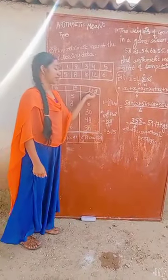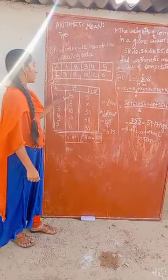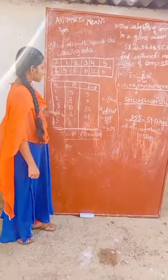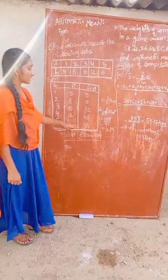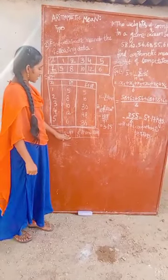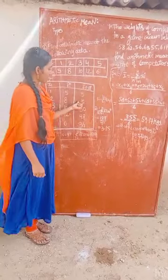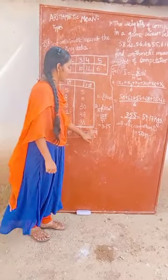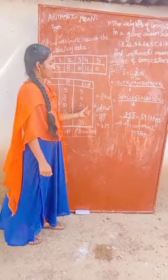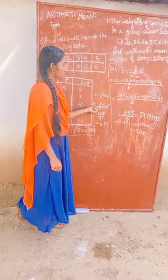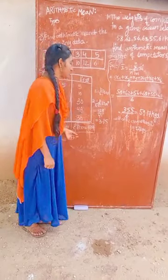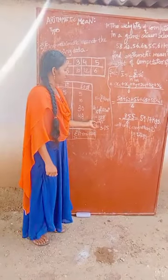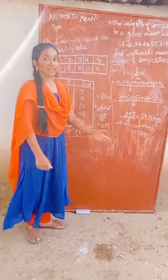We will find fi times xi by multiplying fi and xi. 1 times 5 equals 5; 2 times 8 equals 16; 3 times 10 equals 30; 4 times 12 equals 48; 5 times 6 equals 30. The sum of fi equals N, which is 41. The sum of fi times xi equals 129. Substituting in the formula: x-bar equals 1 by N times summation fi xi equals 129 divided by 41, which equals 3.15.